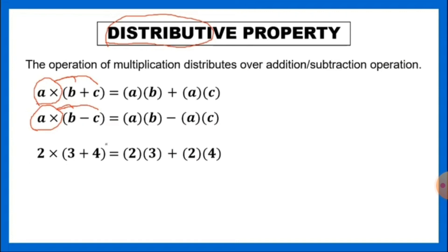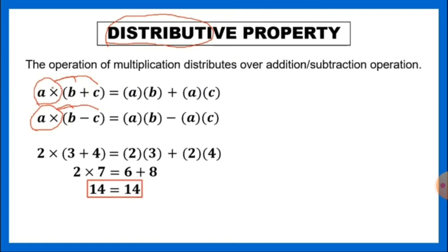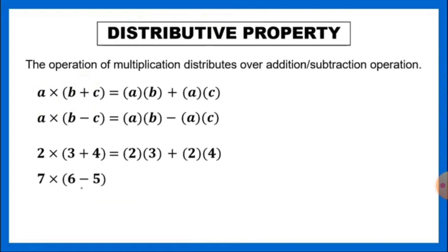For example: 2 times the quantity (3 plus 4). We distribute 2 to 3 to get 2 times 3, and since addition is inside, we add, then 2 times 4. Using PEMDAS on the left: 3 plus 4 is 7, times 2 equals 14. On the right: 2 times 3 is 6, plus 2 times 4 is 8, so 6 plus 8 equals 14. They are still equal — applying distributive property gives the same result.